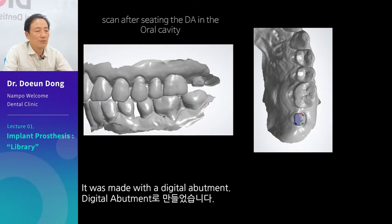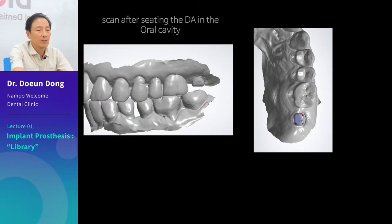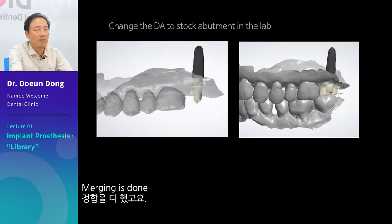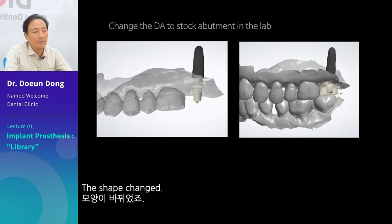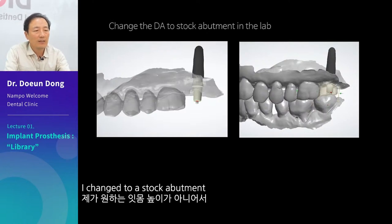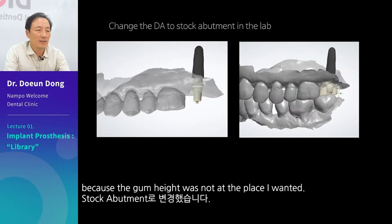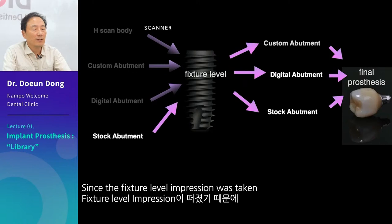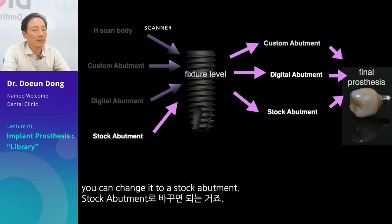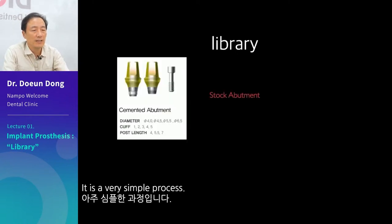It was made with a digital abutment. Merging is done. After this was done, we changed it to a stock abutment — the shape changed. I changed to a stock abutment because the gum height was not at the place I wanted. Since the fixture level impression was taken, you can change it to a stock abutment. It is a very simple process.